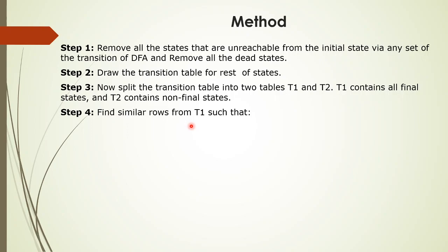Next, find similar rows from T1. Check for the same rows in the table. If two states q and r have the same input and same output in their transitions — that is, delta(q, a) = p and delta(r, a) = p — then q and r are equivalent states.